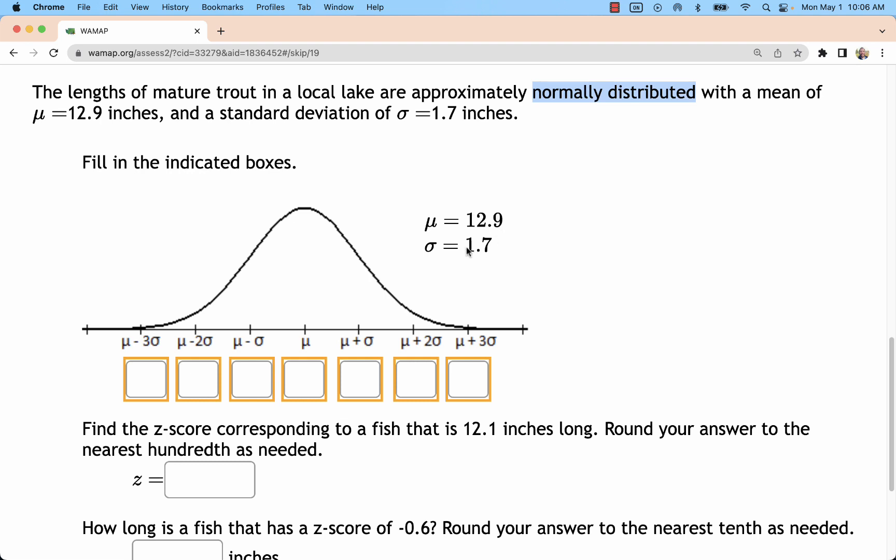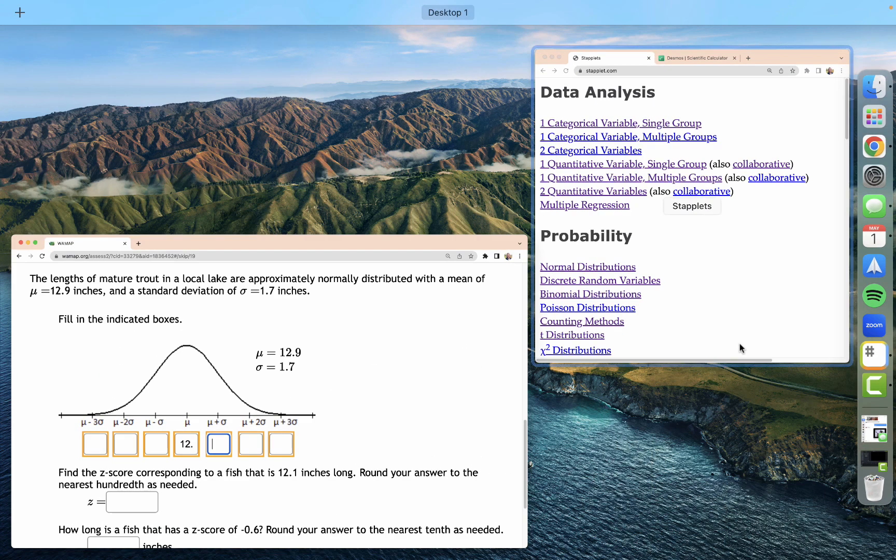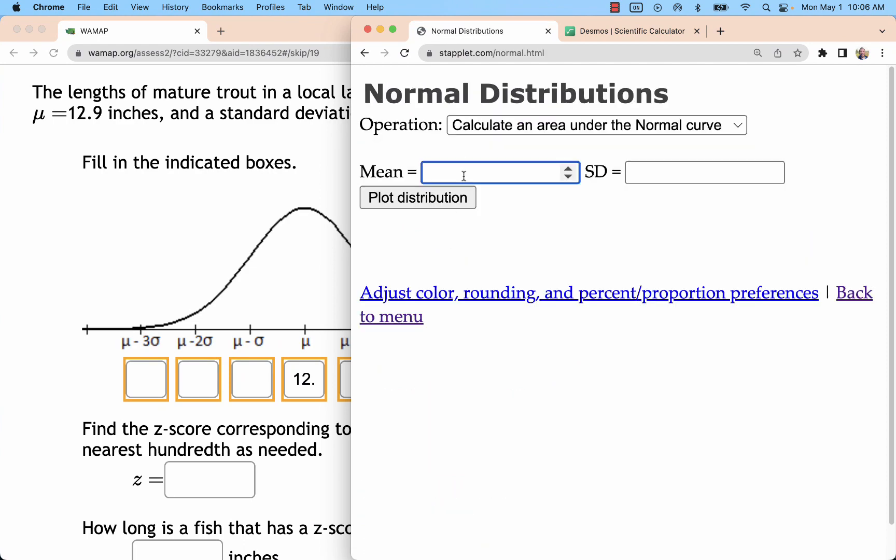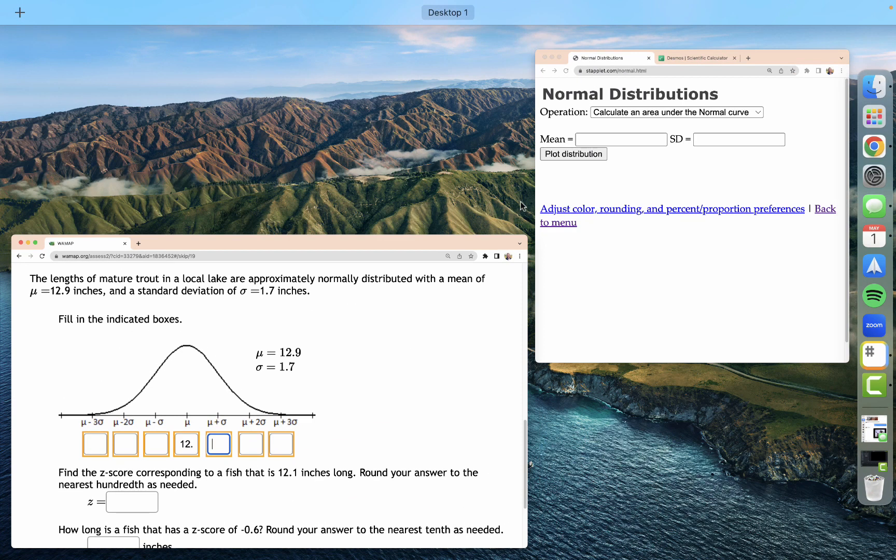You can just grab a calculator. If you take 12.9 plus 1.7, you can get that first box to the right. You want to put 12.9 in the middle, or you can use Staplet. Staplet.com normal distribution will allow you to enter in a given mean and standard deviation.